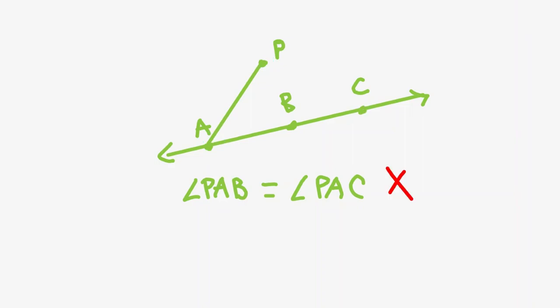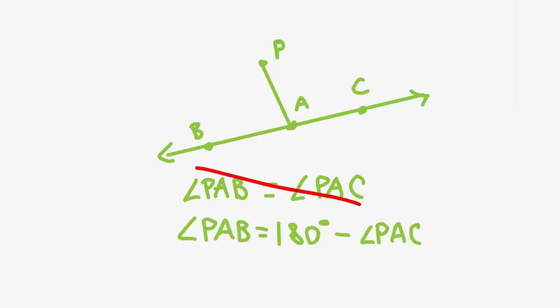First, our condition of angle PAB equals angle PAC does not necessarily tell us that B and C are on the same side of AP. We could have this configuration as well. In addition, if A was instead between B and C, we would have that angle PAB equals 180 minus angle PAC.